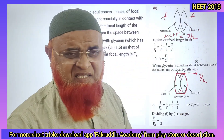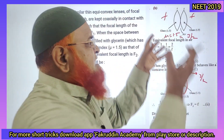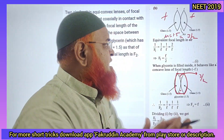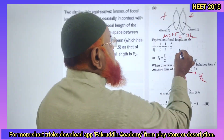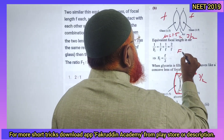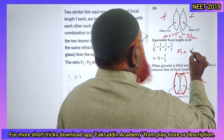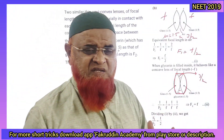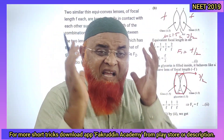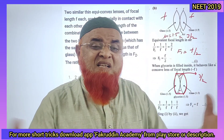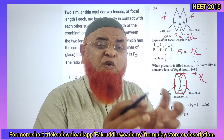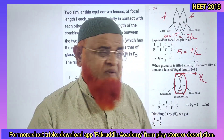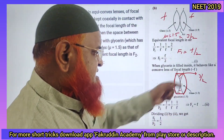The shortcut formula is: whenever the same type of lenses are joined together — as in the first case — the focal length will become half. You have to remember this. Whenever equal convex lenses are joined together, their focal length will become half.